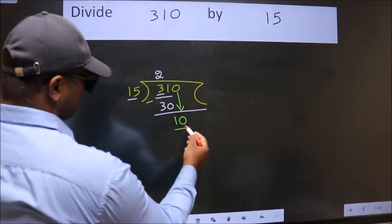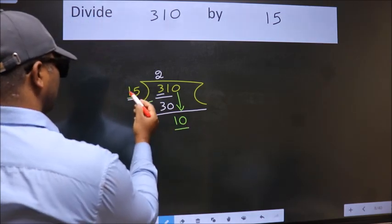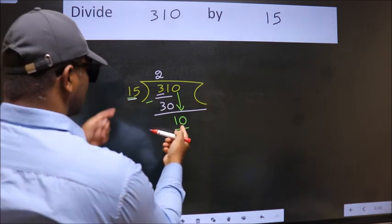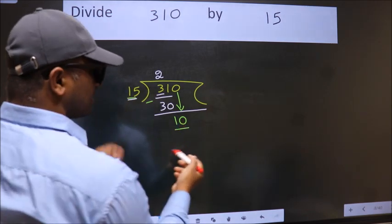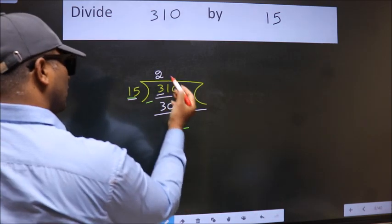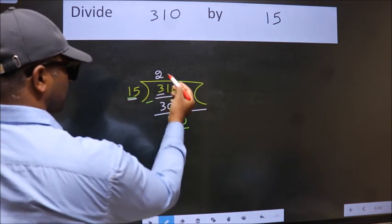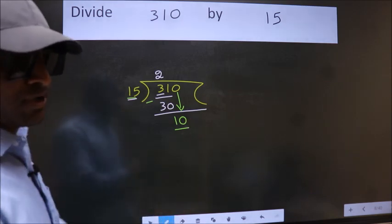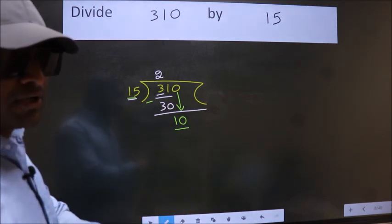Here we have 10. Here 15. 10 is smaller than 15. So what many do is they directly put dot, take 0. Which is wrong. Why is it wrong?